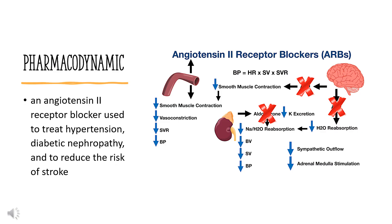Overall, Olmesartan's physiologic effects lead to reduced blood pressure, lower aldosterone levels, reduced cardiac activity, and increased excretion of sodium. Olmesartan-Medoxomil contains Olmesartan, a drug that inhibits the renin-angiotensin system, RAS.